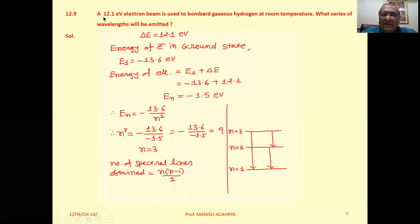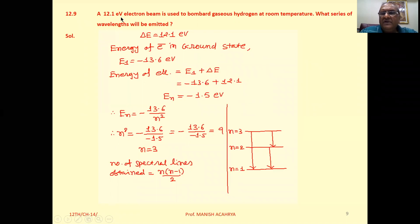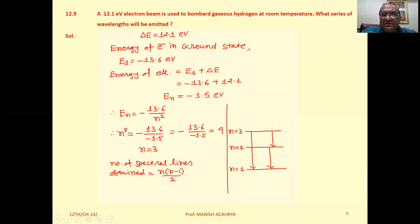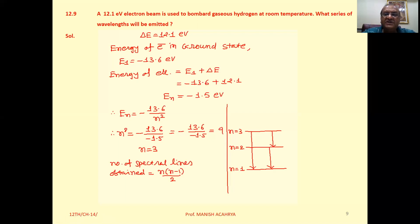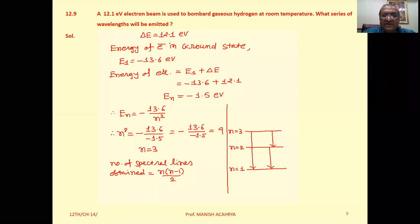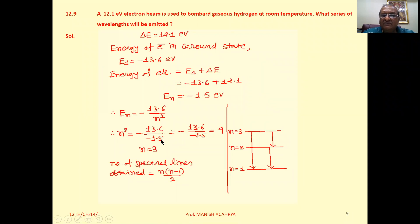The same example is repeated taking energy as 12.1 electron volt. If the energy absorbed by the electron in the ground state is 12.1, then the total energy will be minus 13.6 plus 12.1, which gives minus 1.5 electron volt. Using EN equals minus 13.6 upon N squared, N squared equals minus 13.6 divided by minus 1.5, which gives 9, so N equals 3.